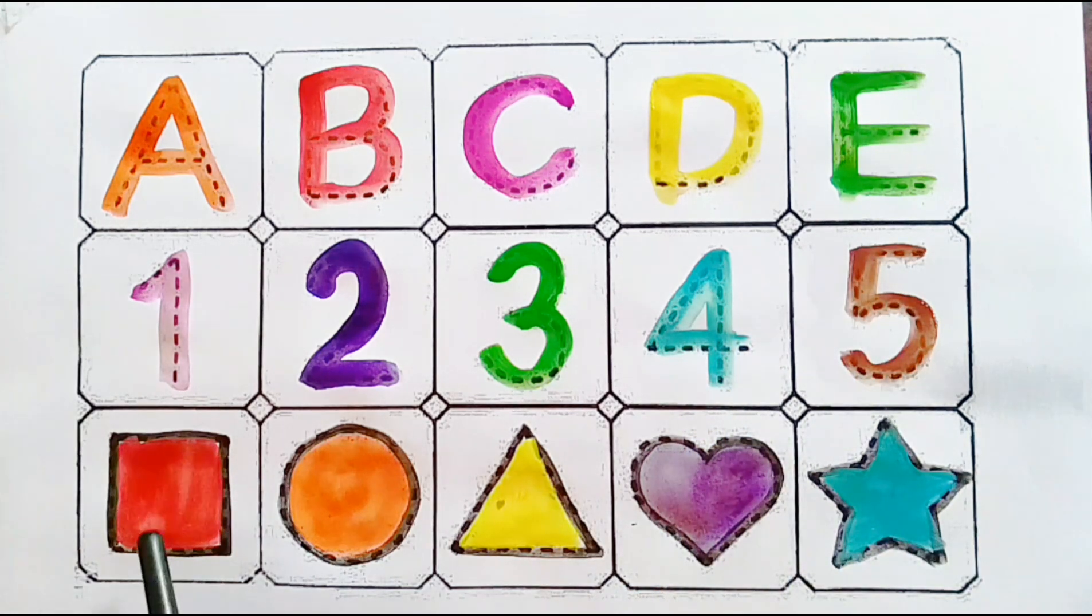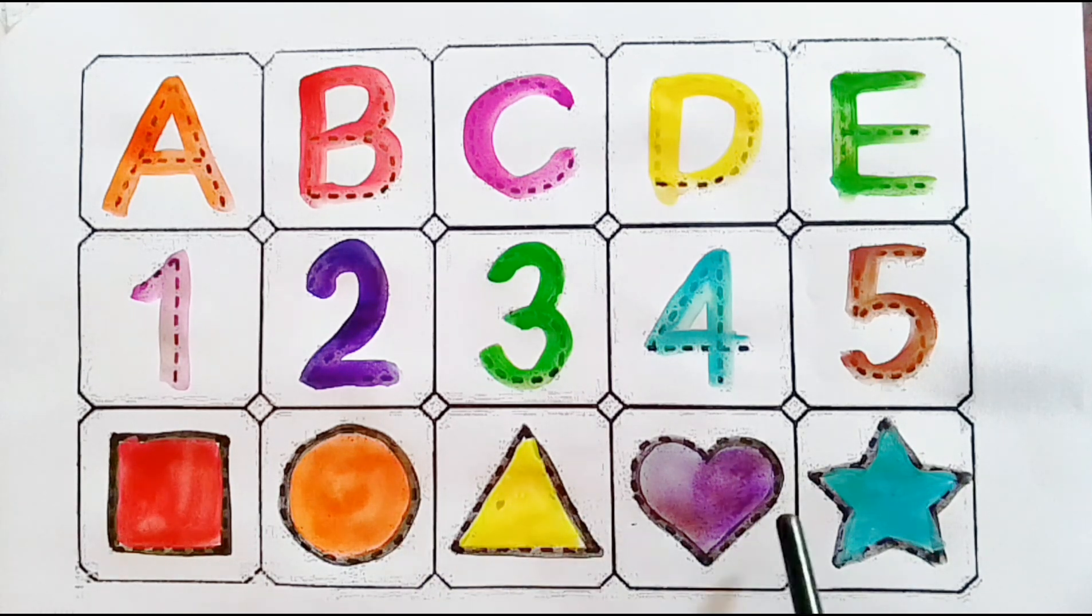2D shapes. Red color square. Orange color circle. Yellow color triangle. Violet color heart. Sea green color star.